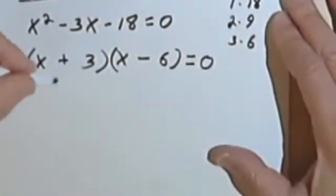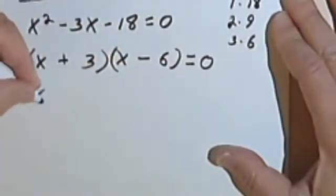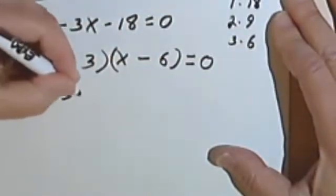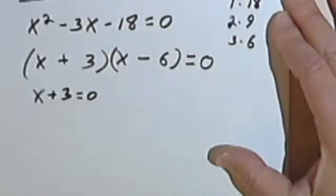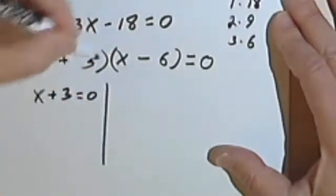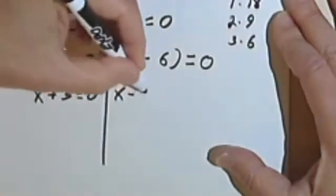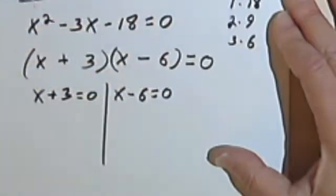So what I'm going to do is make two equations out of this. I'm going to say that x plus 3 equals 0, and x minus 6 equals 0. And now I'm going to solve the two equations.